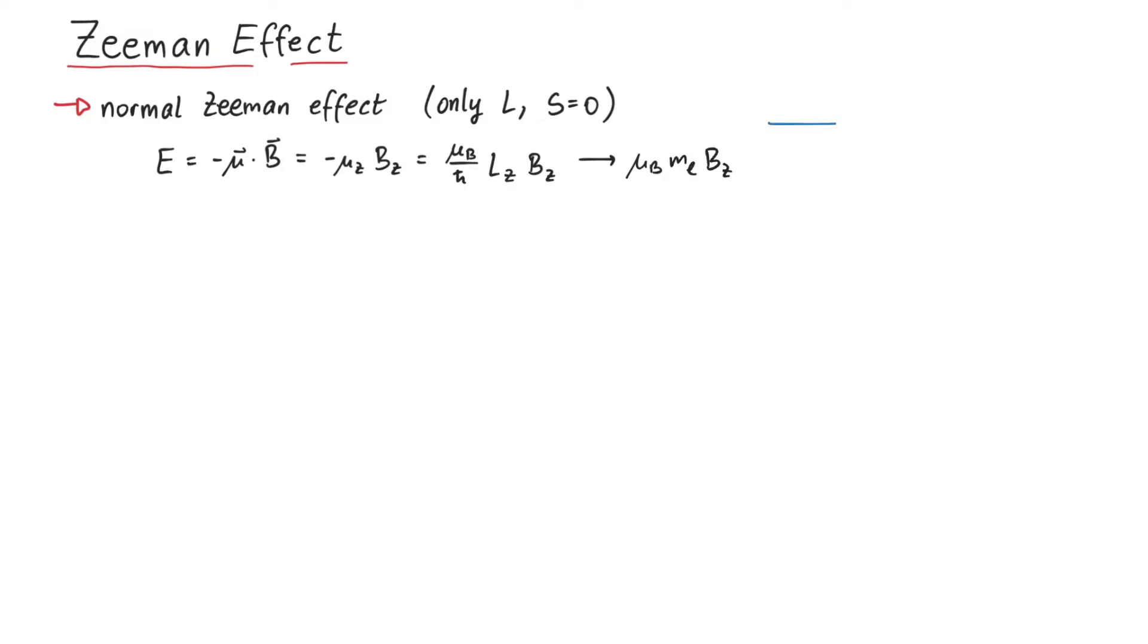Since different values of ml are integer steps apart, the line splits in equally distant lines. For an electron with l equals 1, we get three lines. Also, if we increase the magnetic field, the lines will move further and further apart.